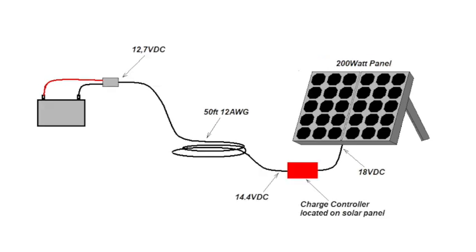One more option we want to look at is the location of the charge controller. Now, when the panel is putting out the maximum amount of energy it can, it's going to be producing about 18 volts DC.